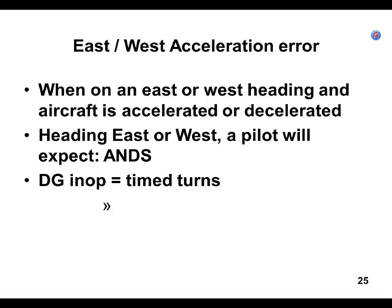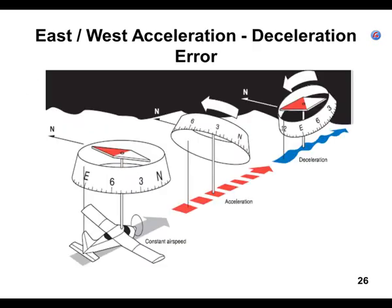One could argue that in an overpowered machine like a Cherokee Warrior II with 160 horsepower, in flight we can accelerate and decelerate like a Massey-Ferguson tractor. Does anybody have any questions about east-west acceleration error? The only thing added to your private pilot knowledge is that last line, and here's the diagram we've all seen before.